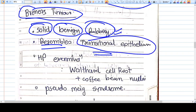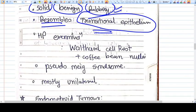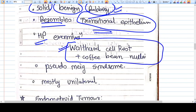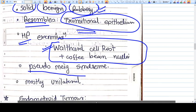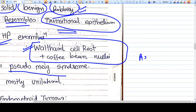On histopathological examination there are characteristics like Walthard cell rests and coffee bean nuclei. Pseudo-Meigs syndrome can be seen.